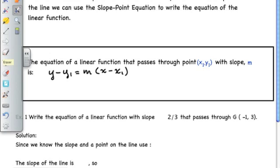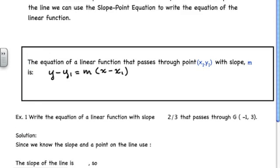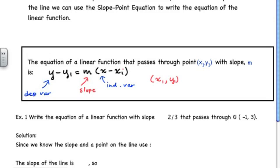The y without the subscript 1 represents the dependent variable, and the x without the subscript represents the independent variable. The m is the slope. The x₁ and y₁ are the coordinates of a known point on the line.